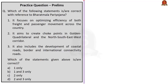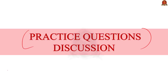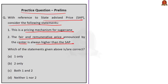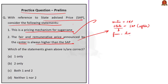Now let us move on to the practice question discussion. With reference to the State Advised Price, consider the following statements. Statement 1: this is a pricing mechanism for sugarcane. Statement 2: the Fair and Remunerative Price announced by the center is always higher than the State Advised Price. From our discussion, we know the first statement is correct. For the second statement, the center first announces the FRP and then the state announces the SAP, which is generally fixed higher than the FRP to support the state's farmers. So the second statement is incorrect, and the right answer is option A — Statement 1 only.